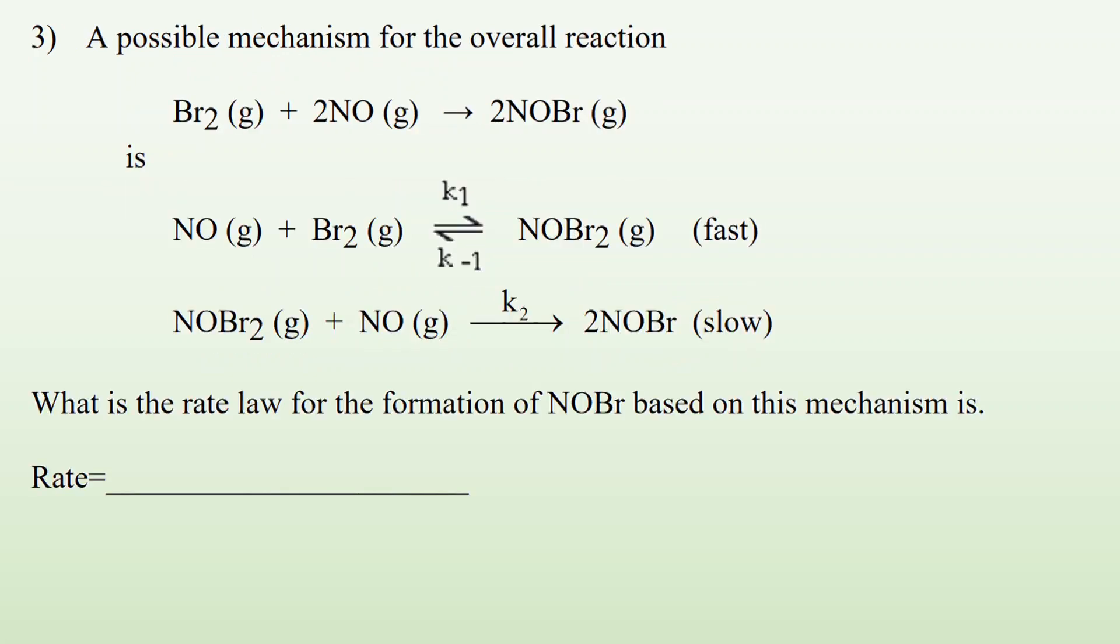Number three, a possible mechanism for the overall reaction. What is the rate law for the formation of NOBr based on this mechanism? If we take a look, this equilibrium in the first step is fast. So if I were to do the rate for that, the rate on the one side equals K times the concentration of NO to the first power times concentration of Br2 to the first power. And because we got this double arrow thing going on, it's telling us there's an equilibrium. So there's also a reverse reaction, which tells me that for the reverse reaction, it's going to be K to the minus one times concentration of NOBr2. And those two things are equal to each other.